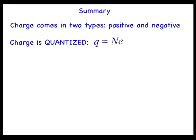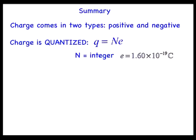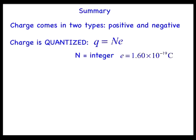Mathematically, we can write this as q equals n times e, where q is the magnitude of the charge, n is an integer, and e equals 1.60 times 10 to the negative 19 coulombs is the fundamental element of charge found on the electron or proton.